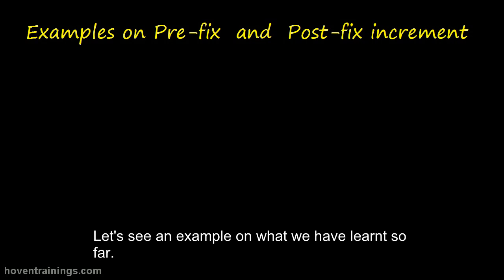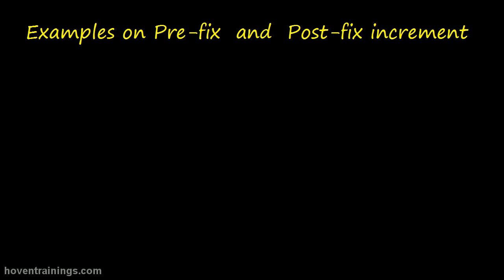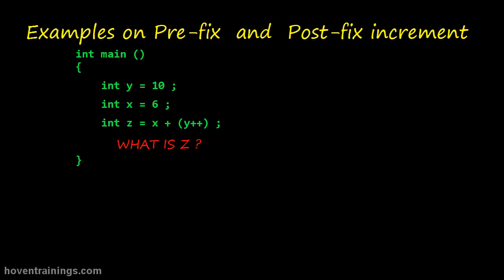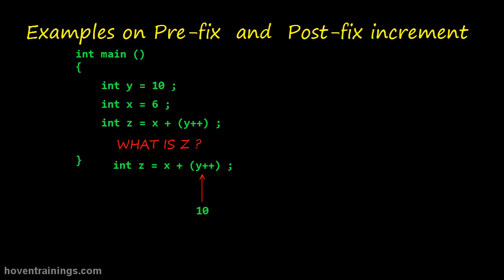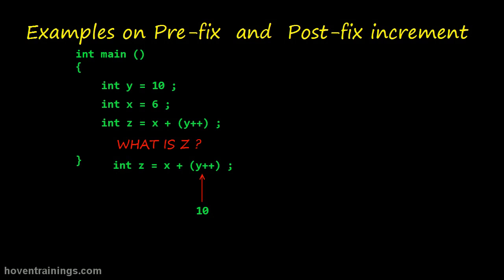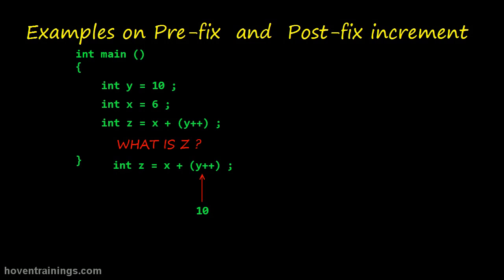Let's see an example on what we have learned so far. What is the value of Z in this code? Y will appear as 10 first, and 10 added to X gives 16. So the output would be 16.